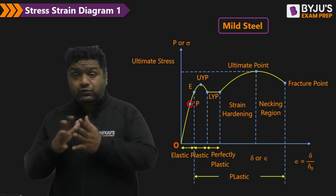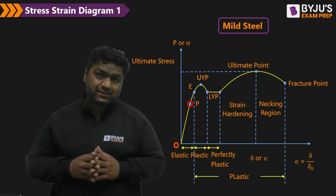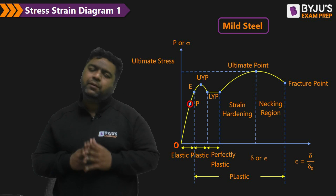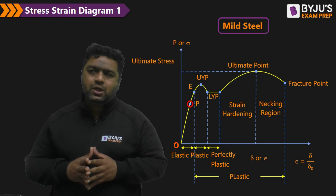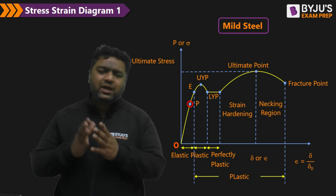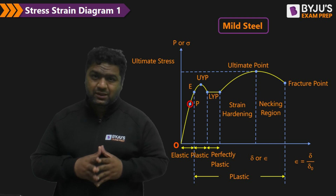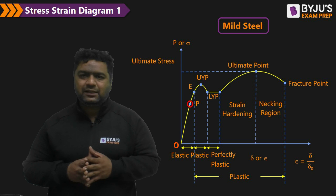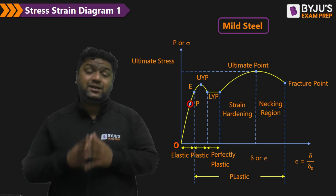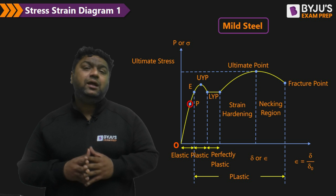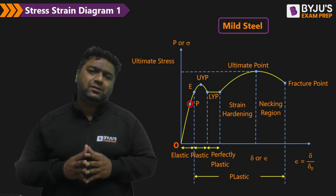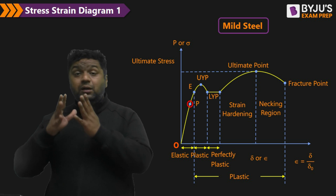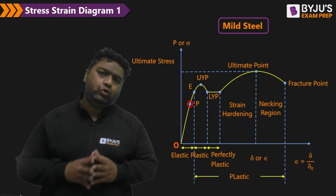Some materials, like gray cast iron, do not follow Hooke's Law, so their stress-strain diagram is never a straight line. For such materials we cannot define Young's modulus, which is the slope of the stress-strain diagram up to the elastic limit. Instead, for gray cast iron type materials we discuss the secant modulus or tangent modulus.